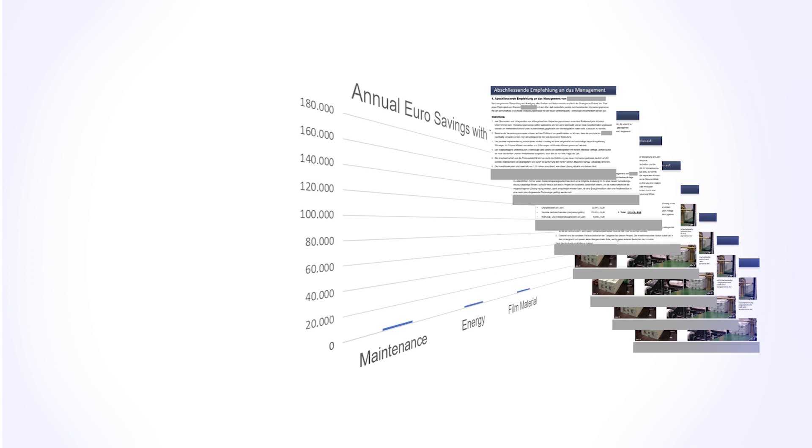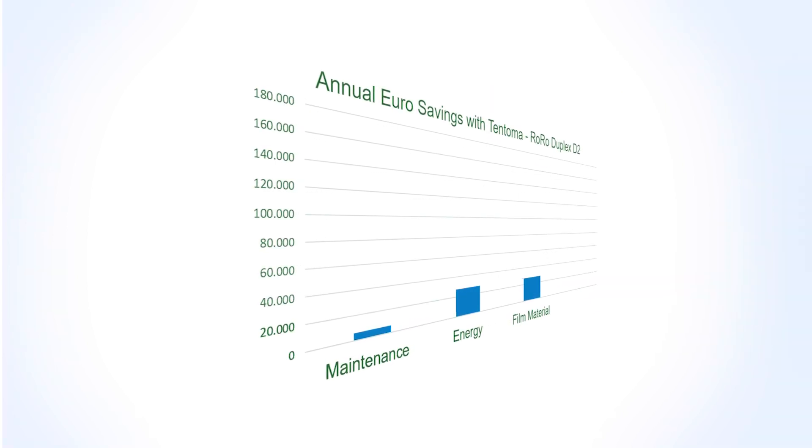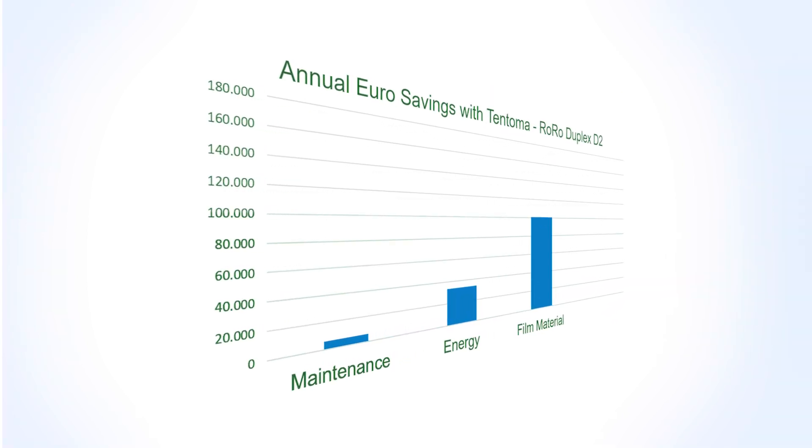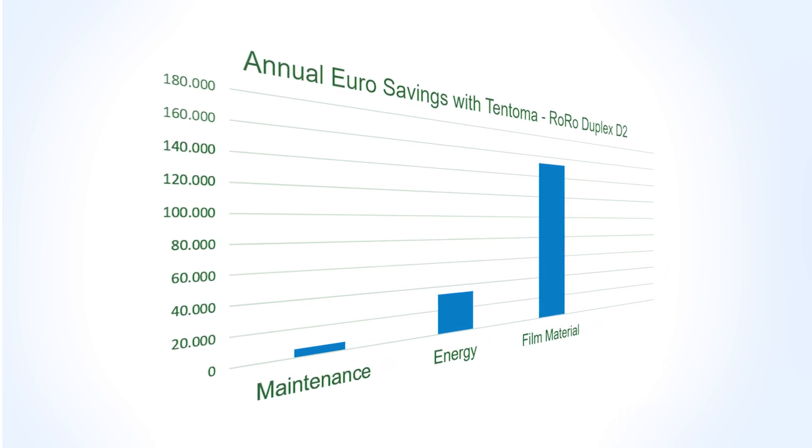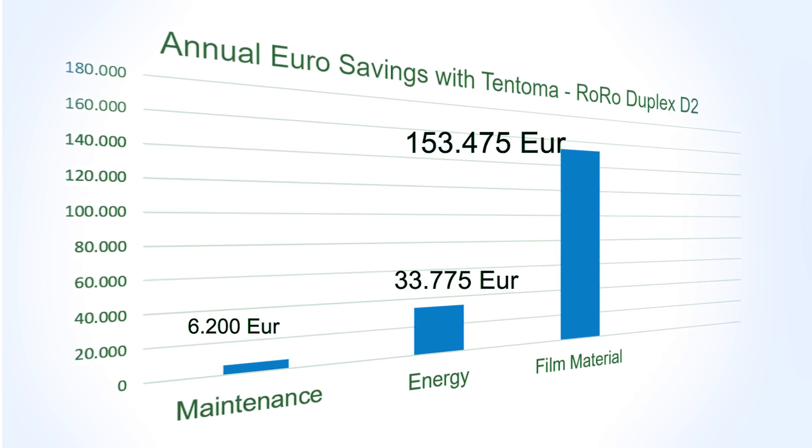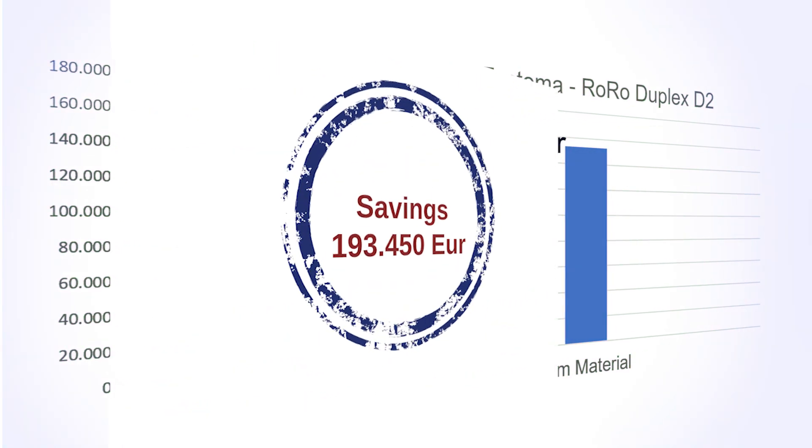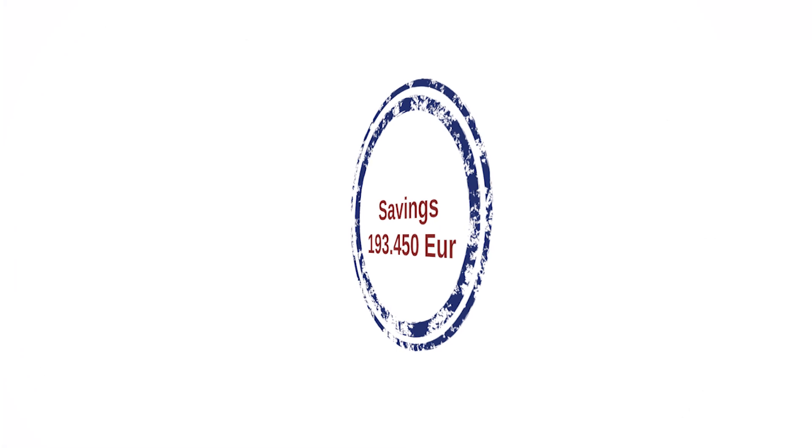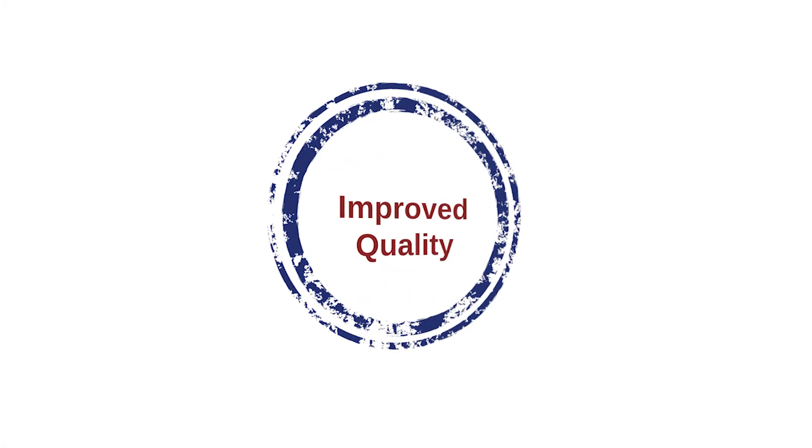One of our XPS manufacturing customers wanted to understand their exact savings. They looked at maintenance, energy, and film. The maintenance savings per year amounted to more than 6,000 euro. In energy they calculated 33,000, but the film consumption savings alone was more than 150,000 euro. In total almost 200,000 euro per year savings.